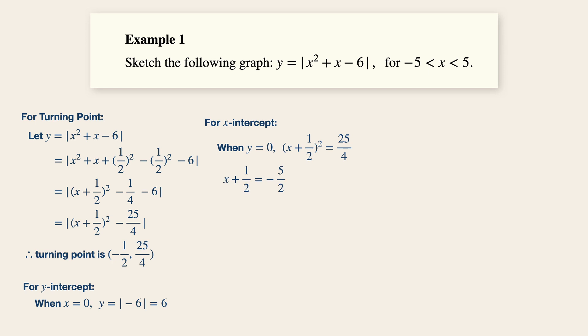x plus half is equals to minus 5 over 2, or x plus half is equals to 5 over 2. Now, x is then equals to minus 3 or 2.